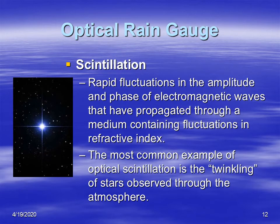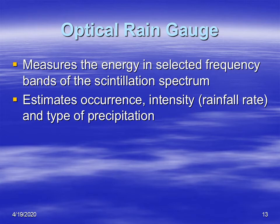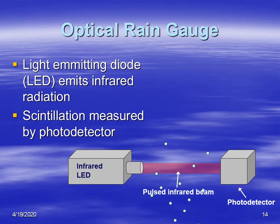Scintillation is the fluctuations in the amplitude and phase of electromagnetic waves that propagate through some medium. In our atmosphere, we see this every night when we look at the stars. If we have a clear sky, we can see the stars twinkling — that's the visible radiation coming through our atmosphere and being absorbed and affected by the molecules in our atmosphere: the oxygen, nitrogen, and argon. Very similarly, they use a particular wavelength, and they know the scintillation properties of that wavelength and the size, intensity, and type of precipitation that's falling. Usually in most applications they use an infrared light-emitting diode to generate the electromagnetic radiation.